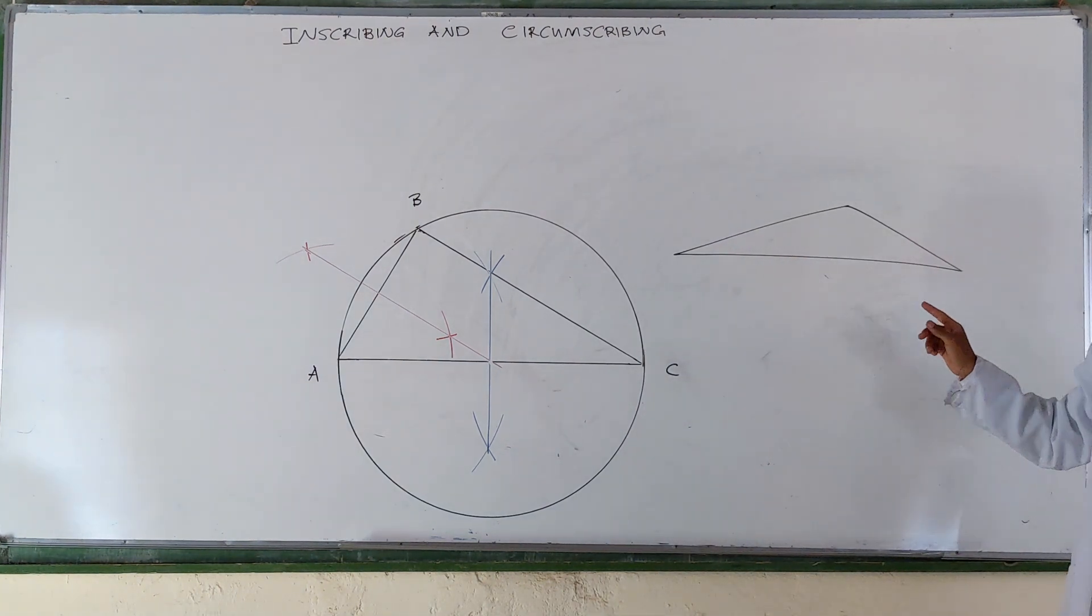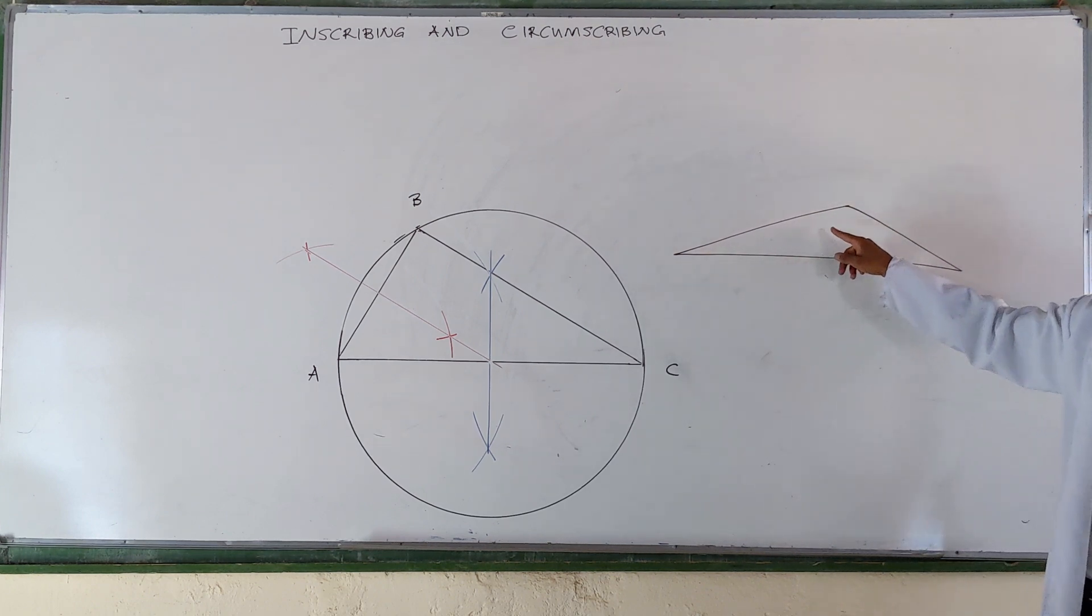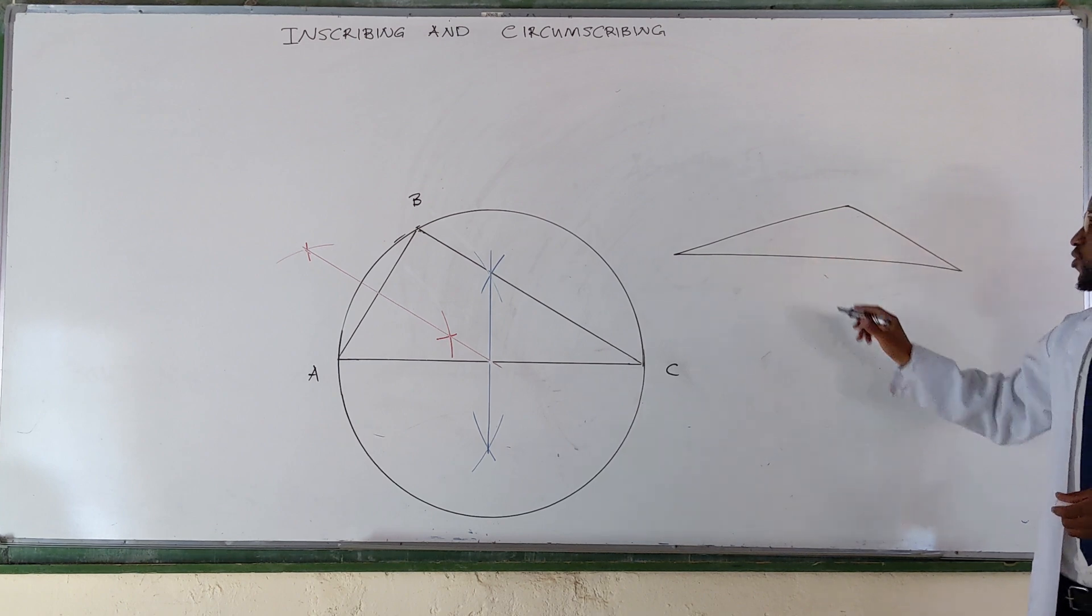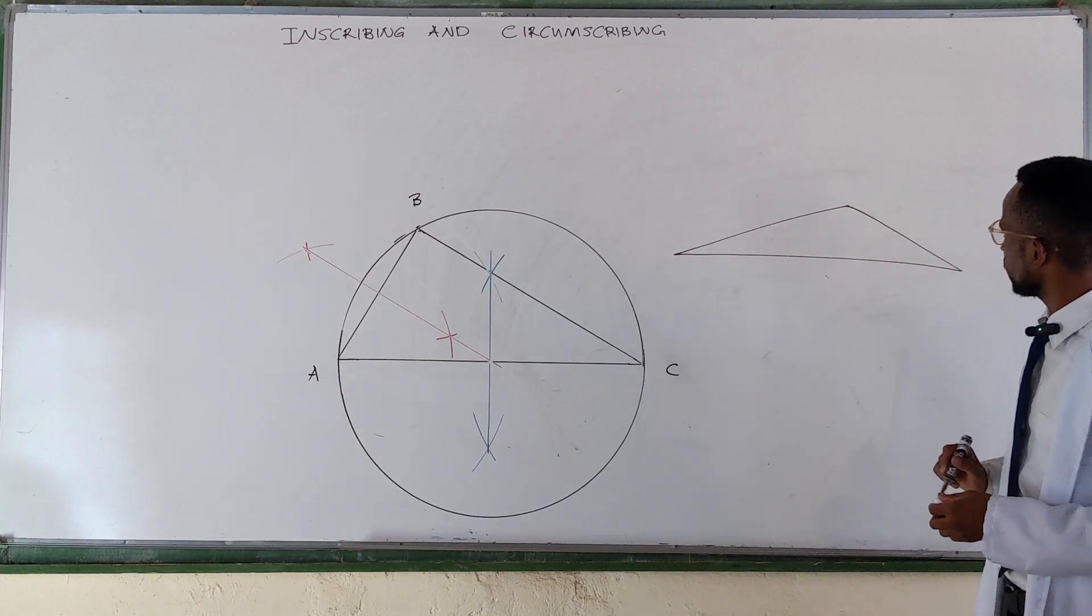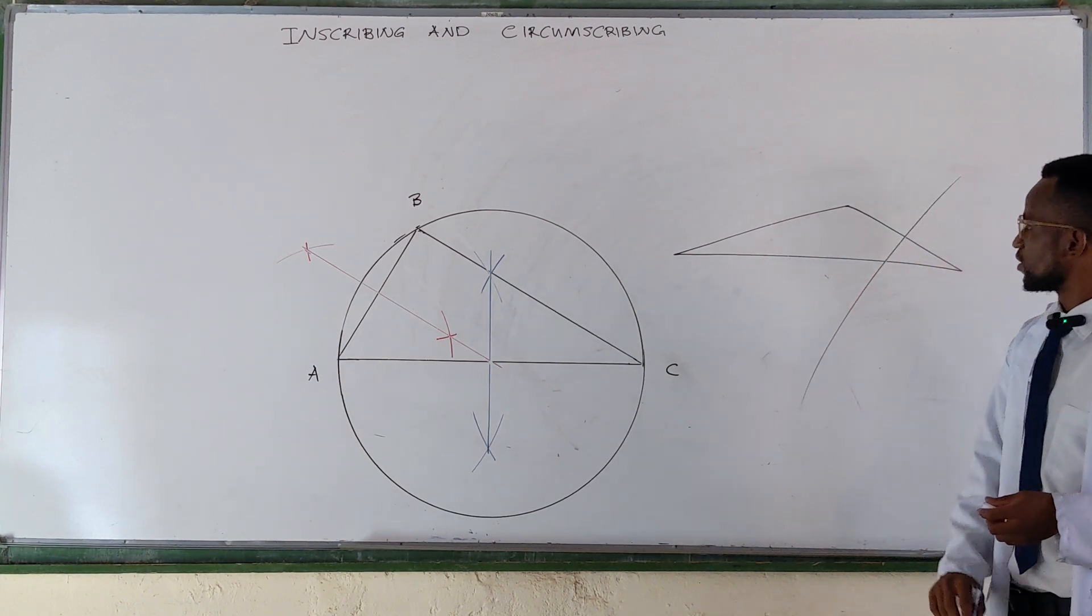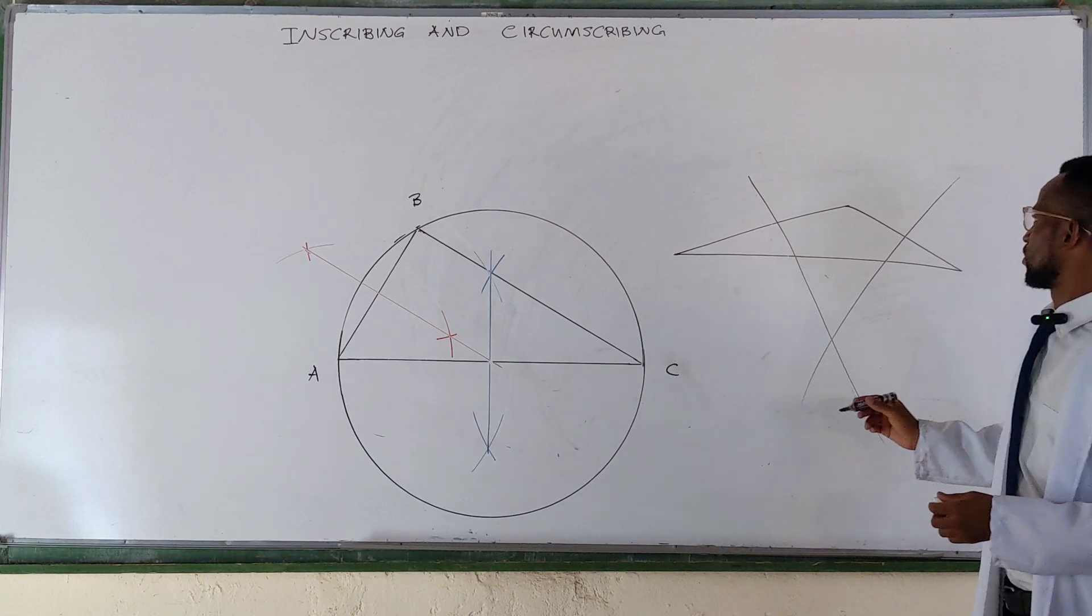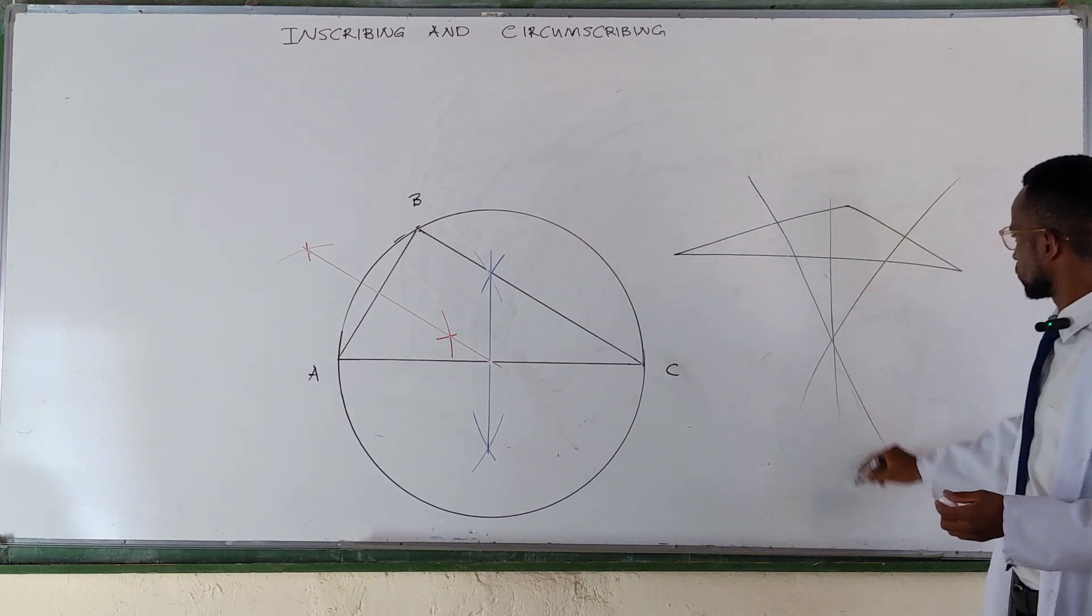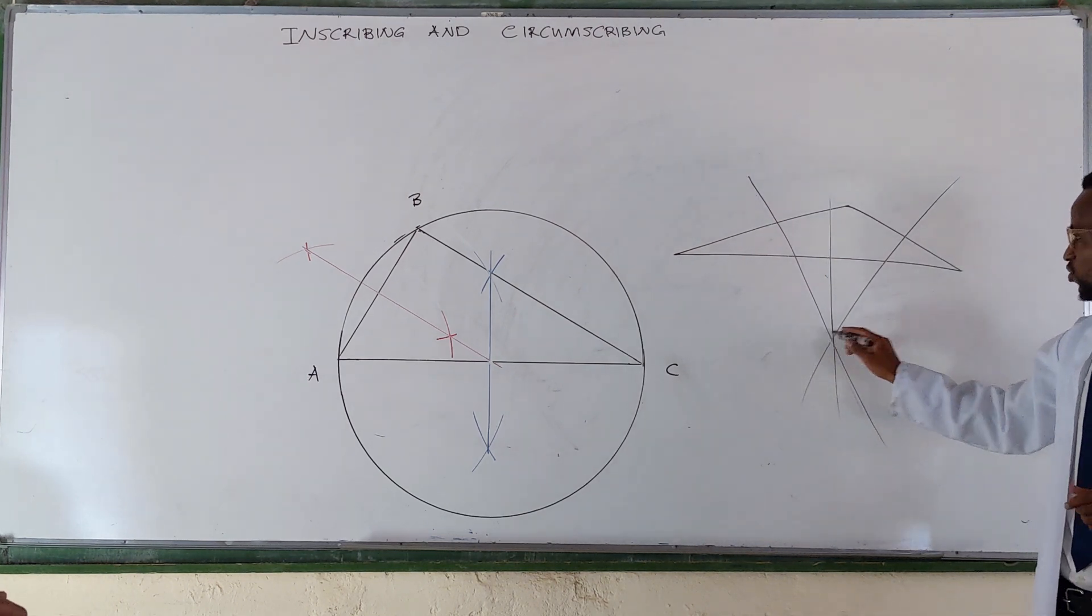For us to draw a circle that will be able to touch this point, that point, and that point, it is not possible for us to have a center inside there, right? The center will be somewhere here. Because when you bisect this line, it will pass through there. When you bisect this one, let's say you bisect this one as well, the center is going to be somewhere here. So like when you draw a circle...